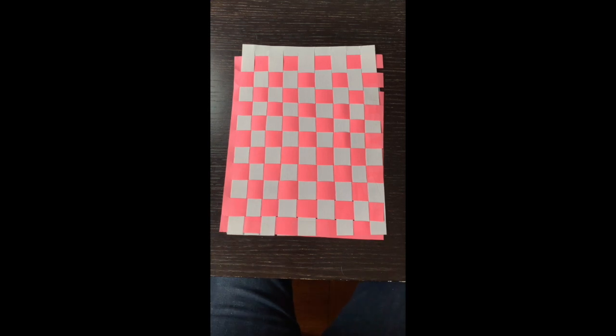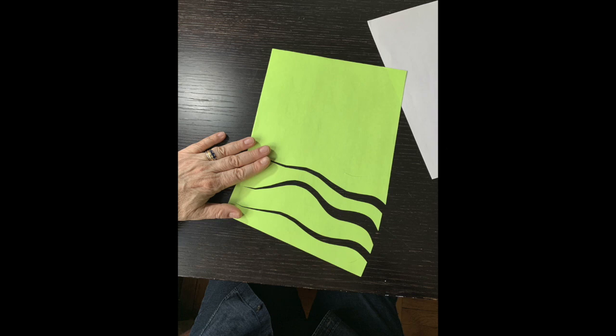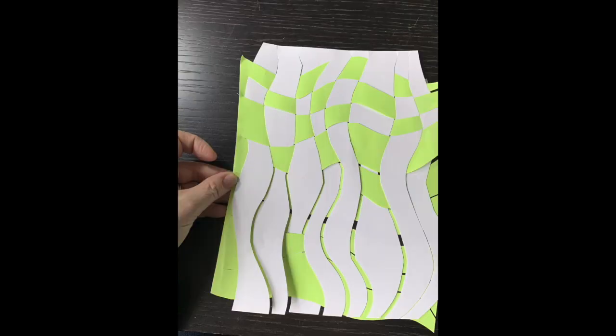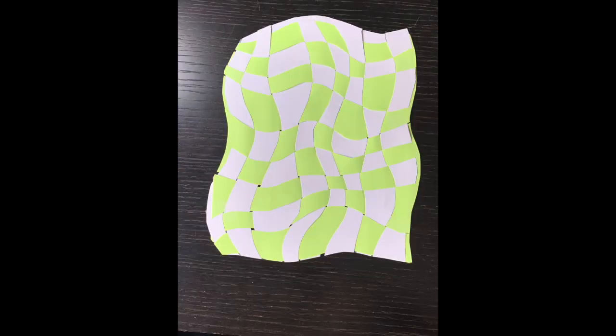Try this variation: cut wavy lines, big and small, in different directions on each piece of paper and weave those together. You can laminate to make a placemat.